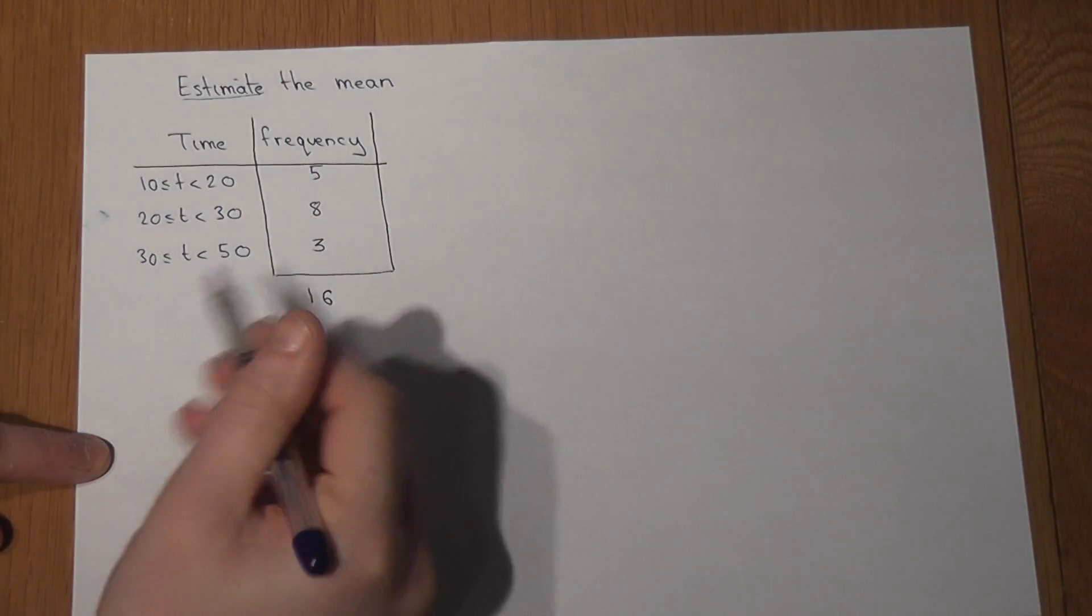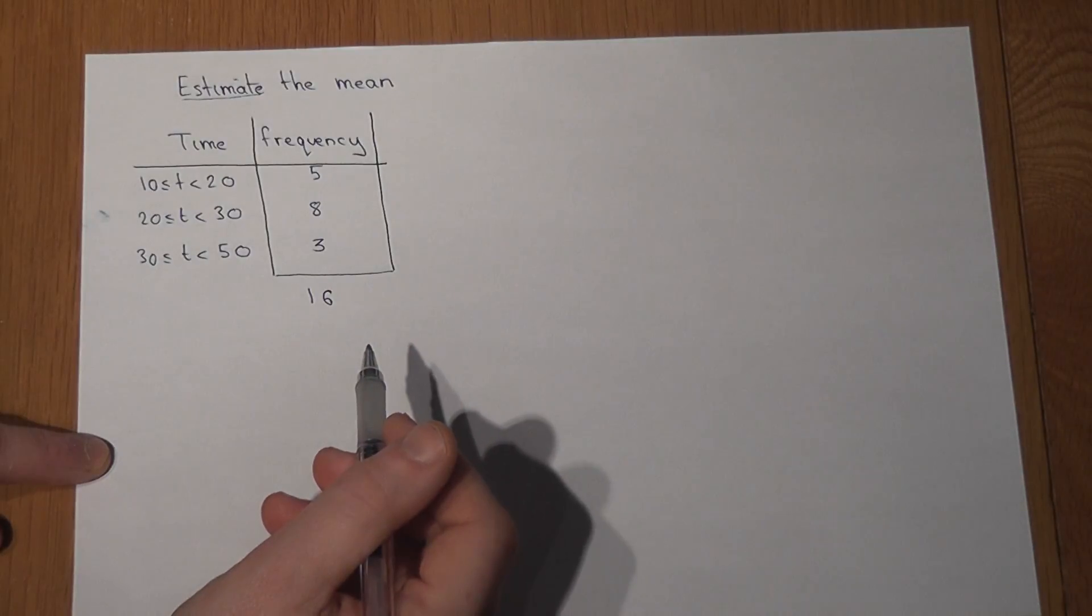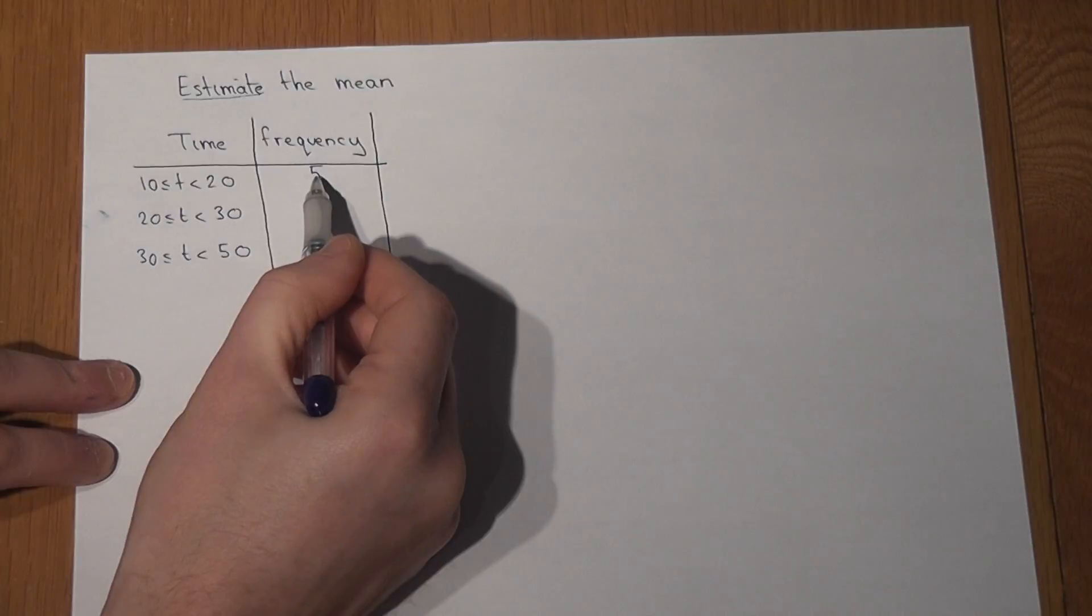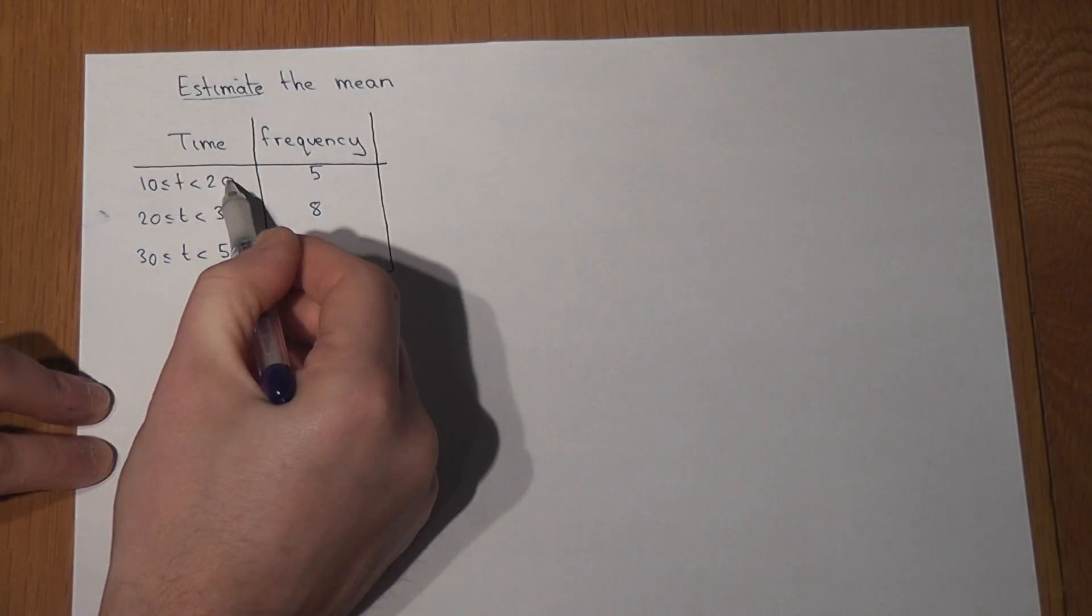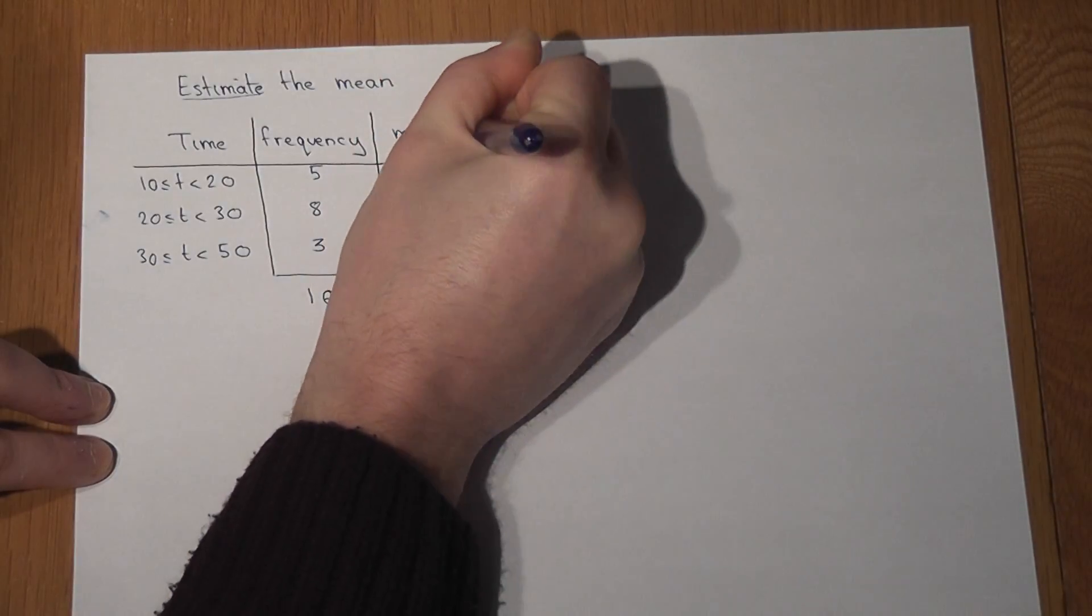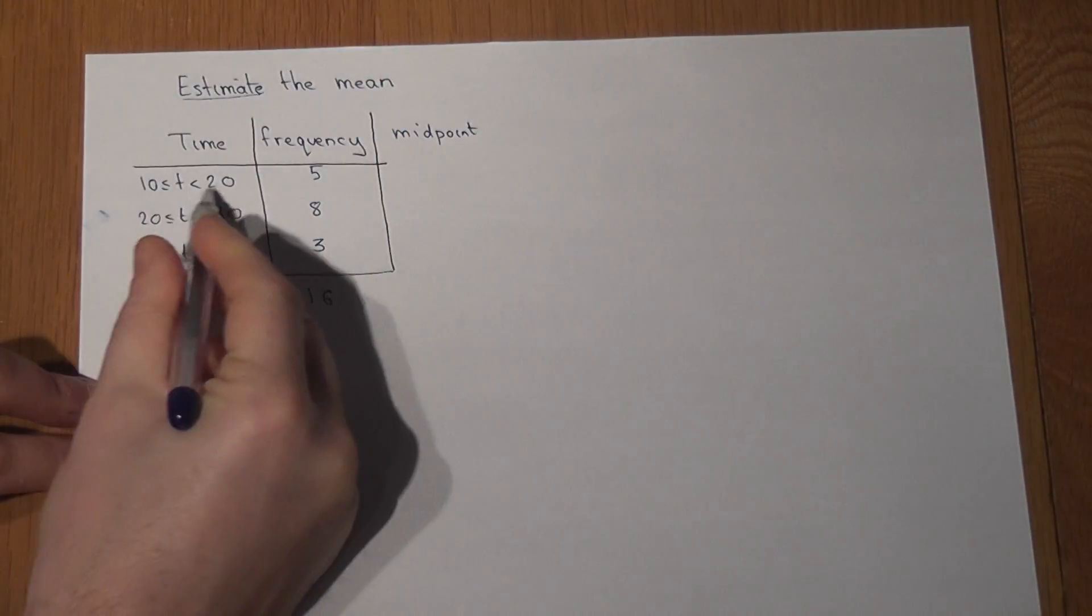These five people here took between 10 and 20, so we estimate their times to be what we call the midpoint. So they took roughly 15 seconds. The middle of 10 to 20 is 15.